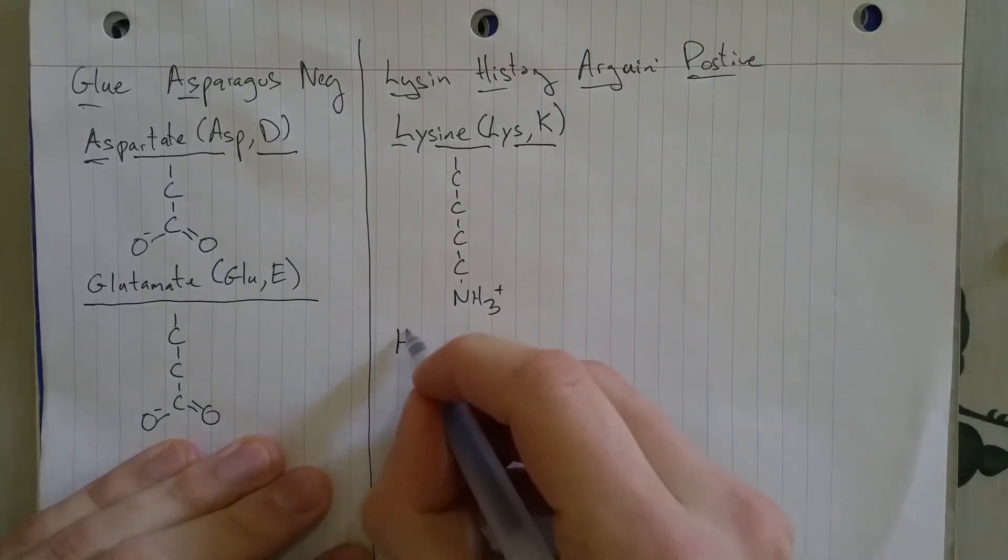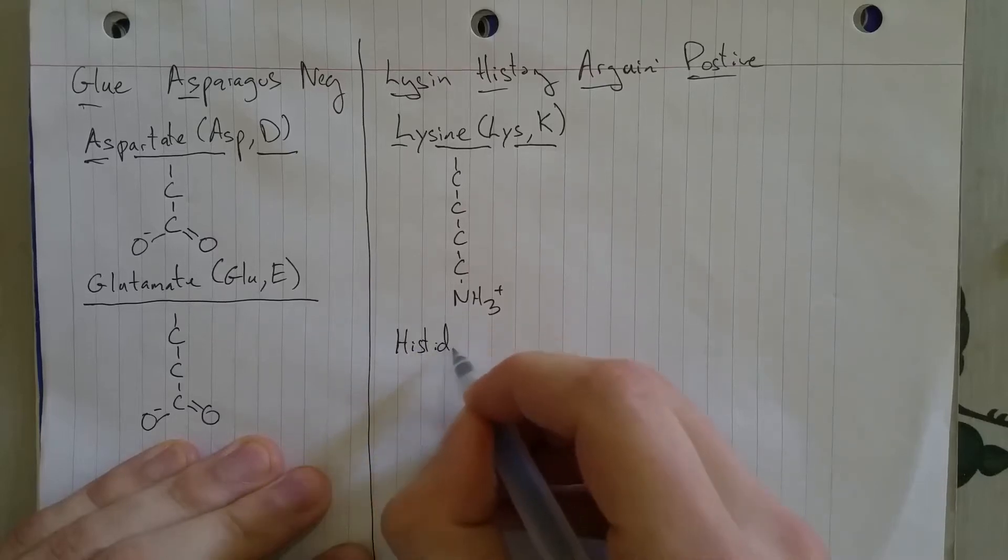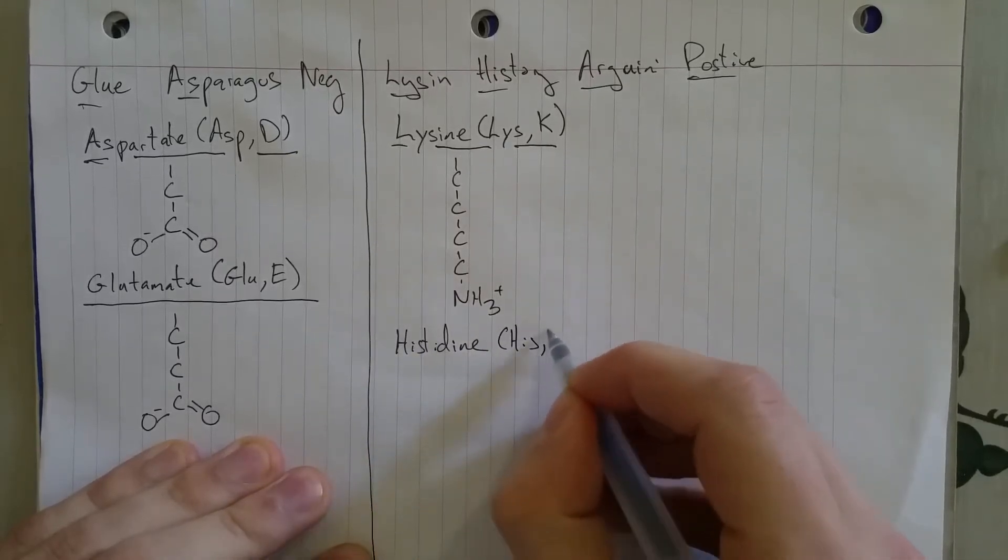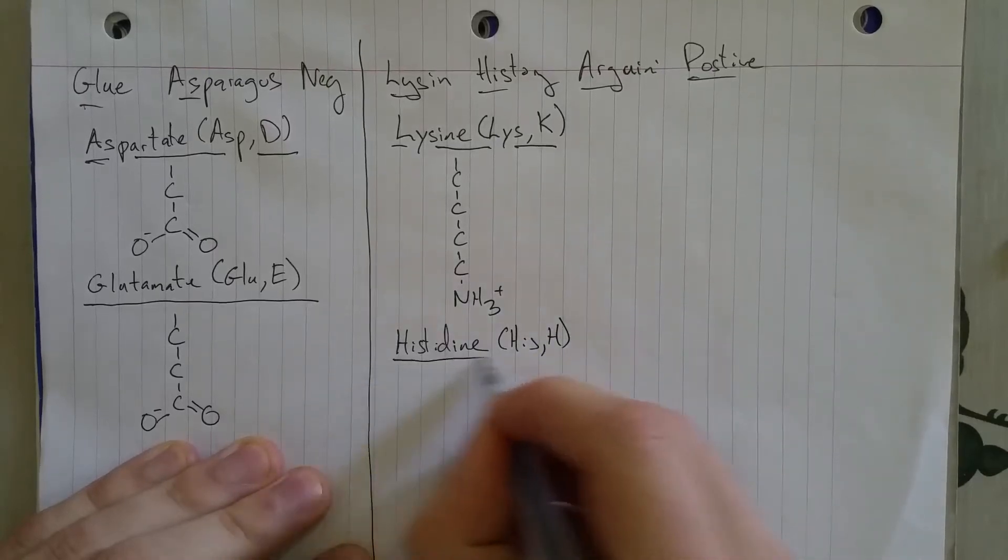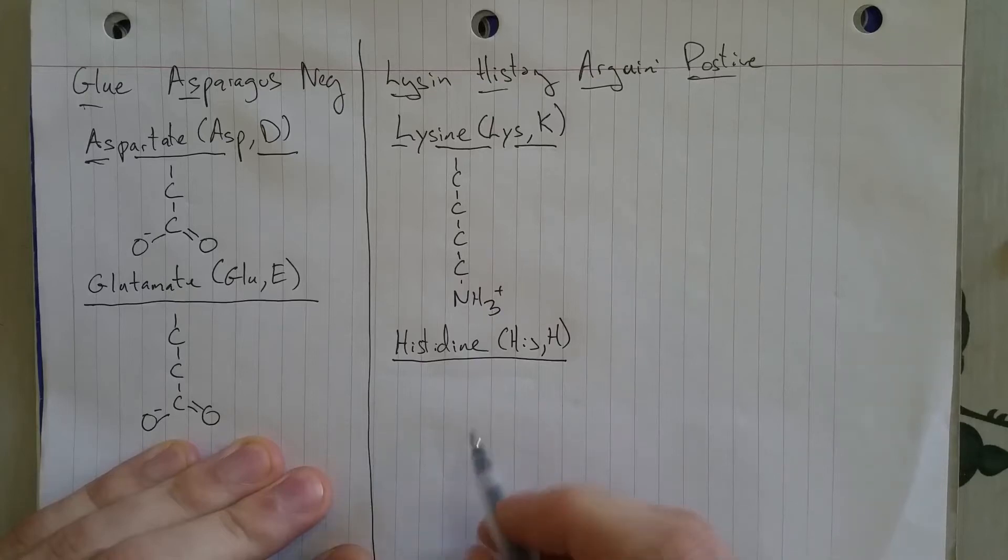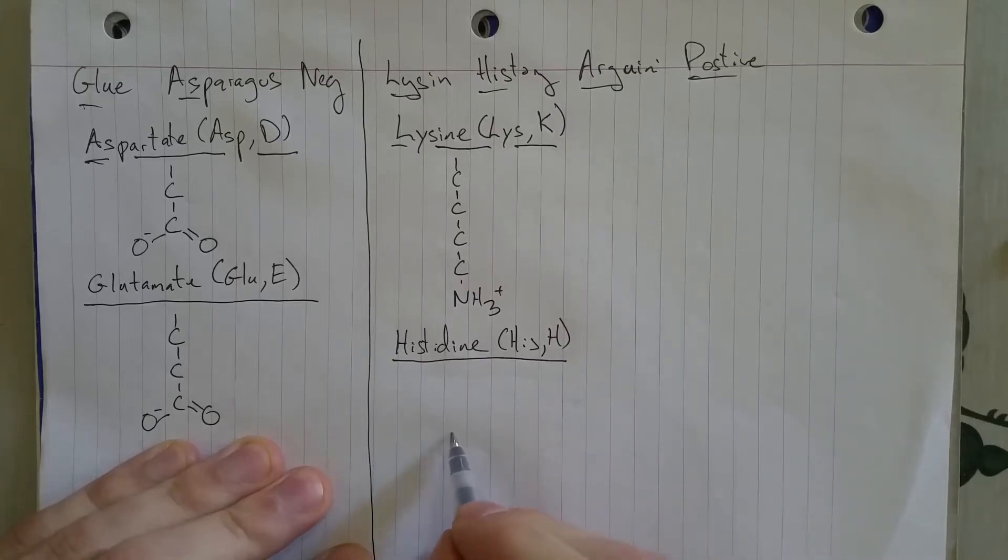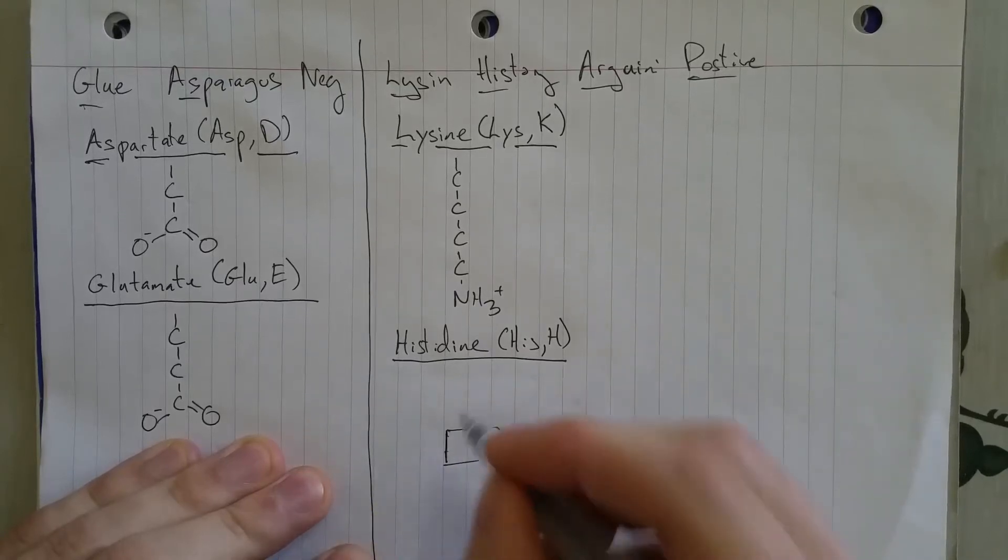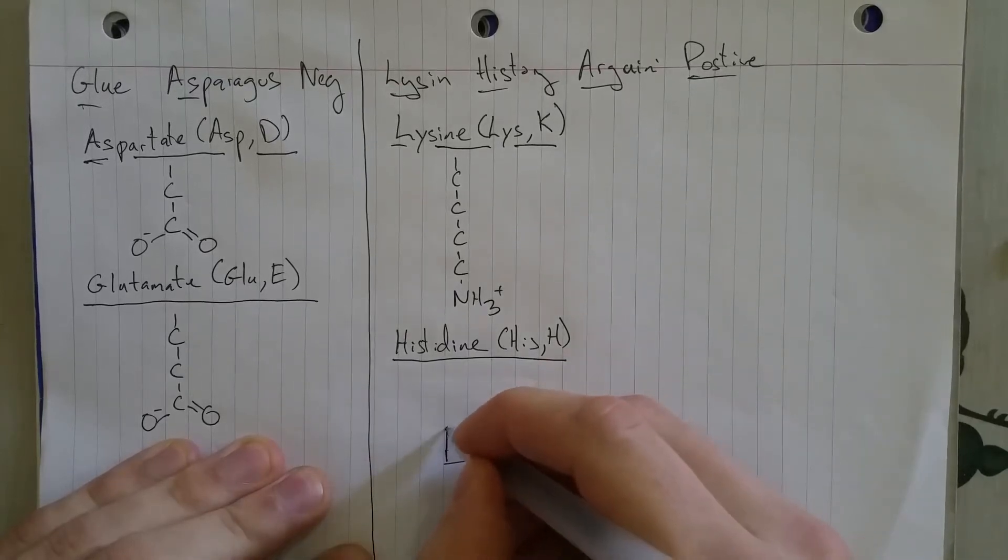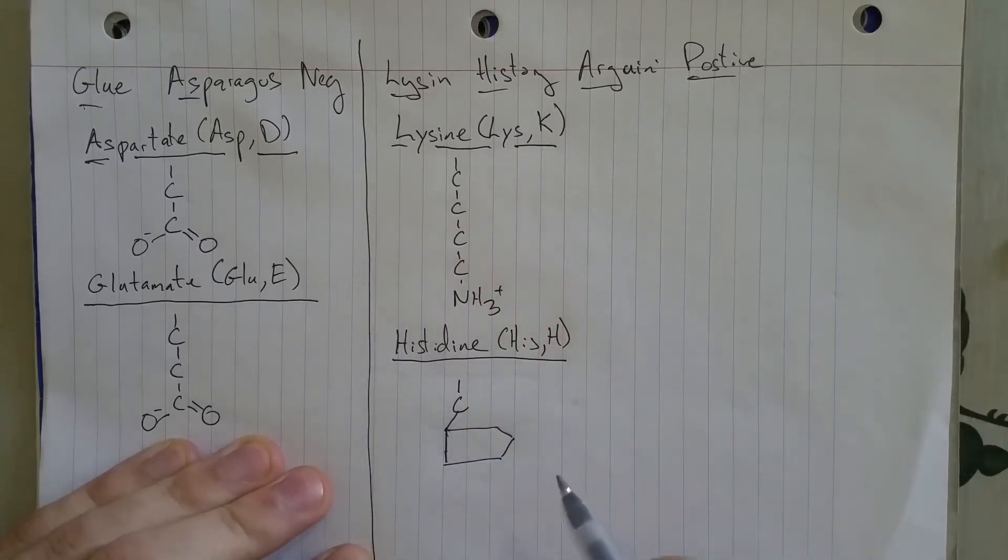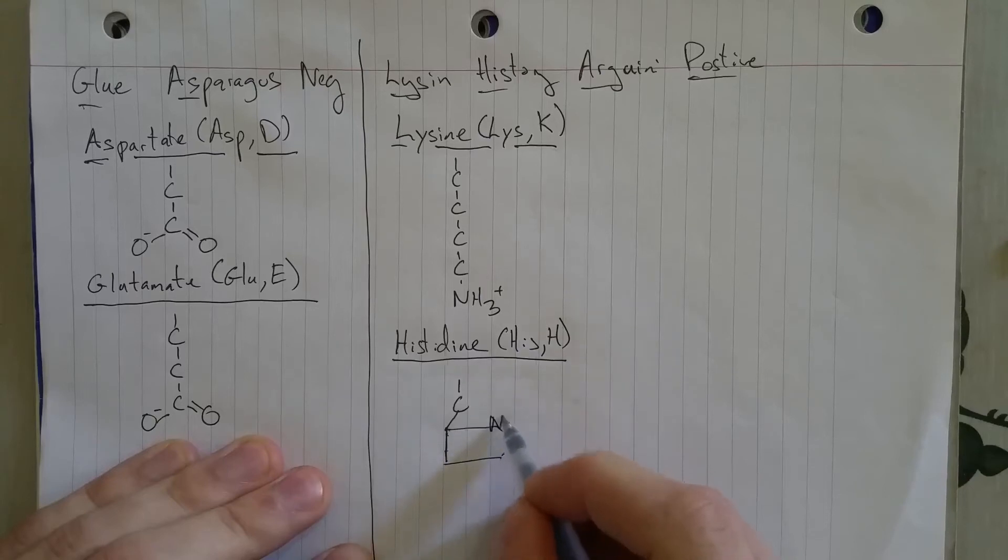Then you've got histidine. H-I-S, H, that's very intuitive. And the way I look at this is, it's like H makes me think of a house. And this is a little house, which is then attached to our beta carbon.